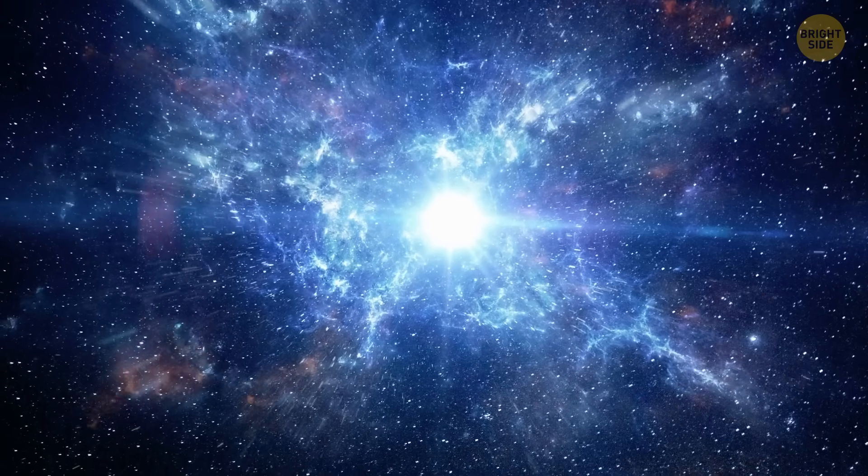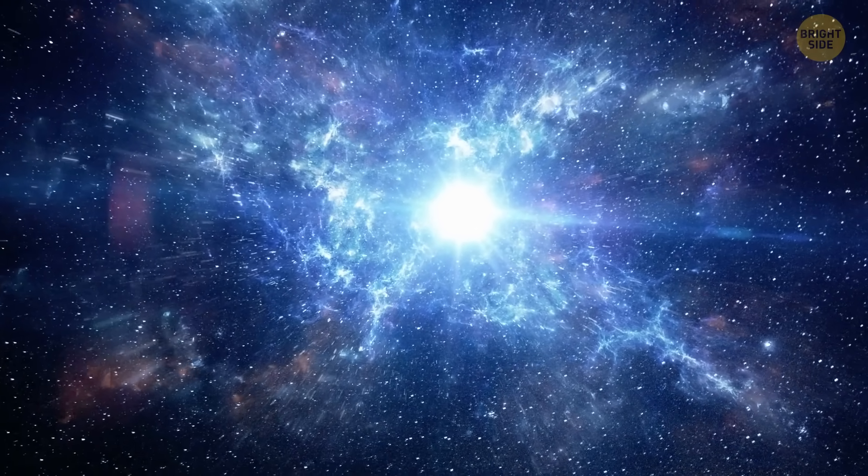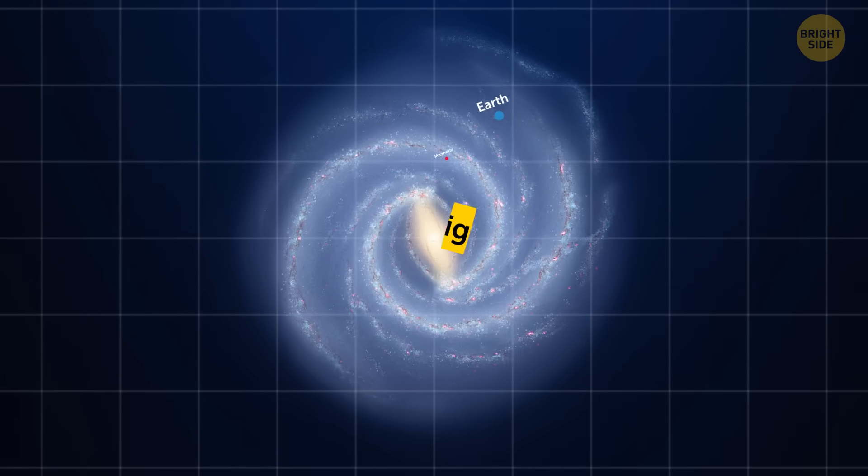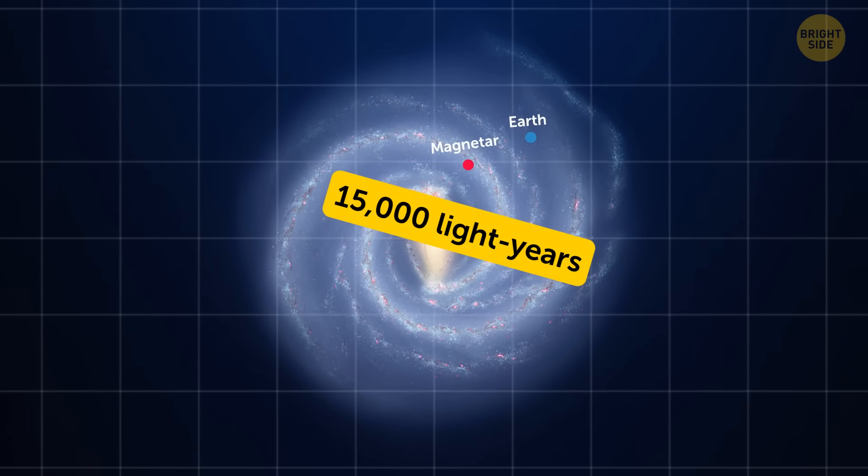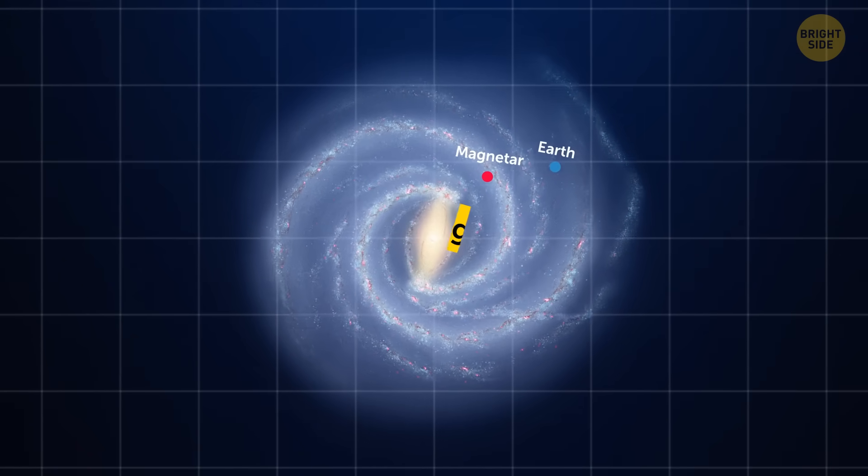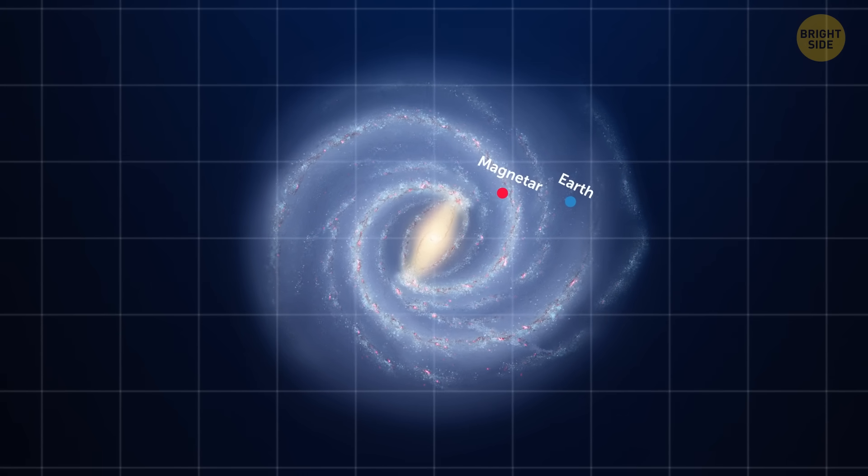Luckily, this magnetar is very far away and not coming near us. When it was first discovered, it was about 15,000 light-years away from Earth. That's a huge distance, so you don't get to worry about your atoms being disconnected yet.